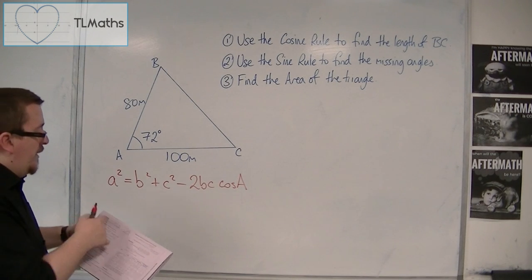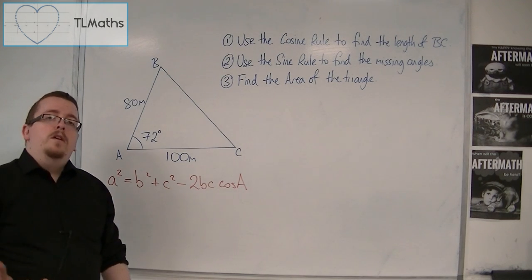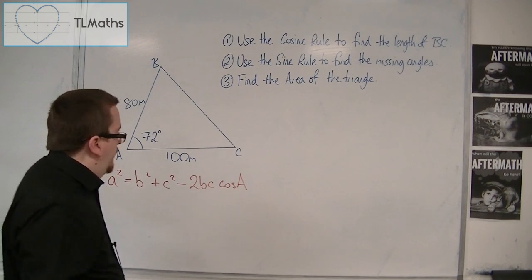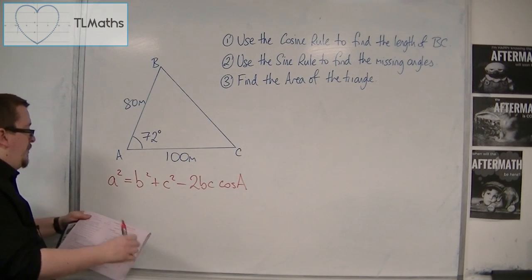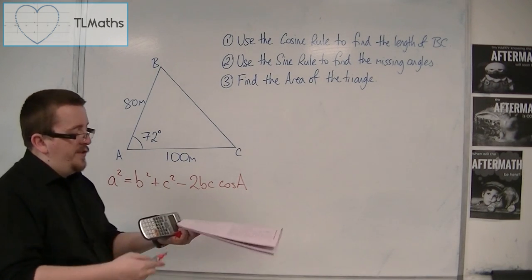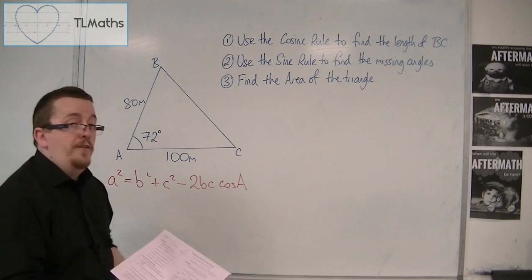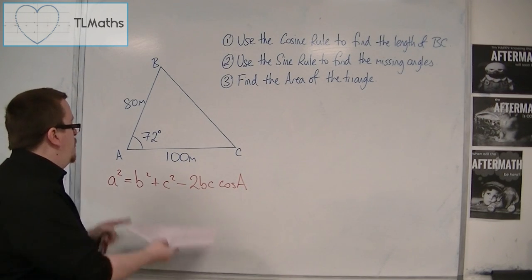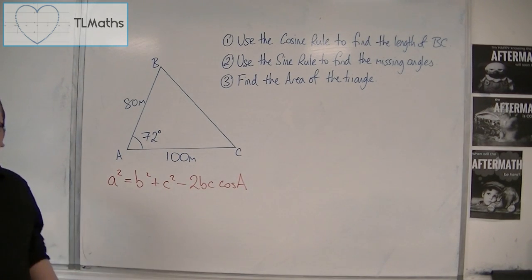it's given to you in the formula booklet on page 3. OK, you're also given the other form of the equation, which maybe your teacher got you to memorise, which is cos a is b squared plus c squared minus a squared over 2bc. OK, that's if you're going to find an angle.